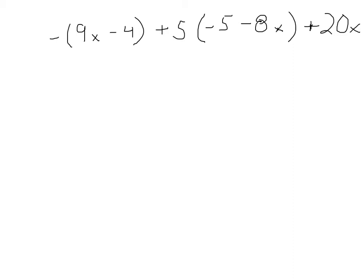Last but not least, here's a little bit more complicated one. We'll just go through it step by step. We'll want to do parentheses first, and so here we know that if there's a negative in front of the parentheses, we need to distribute this negative over to both of these terms. Or another way of looking at it is this is negative 1 times 9x minus 4.